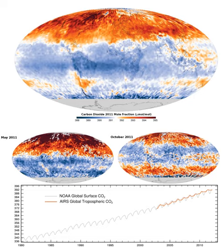Early in the Earth's life, scientists have found evidence of liquid water indicating a warm world, even though the Sun's output is believed to have only been 70 percent of what it is today. It has been suggested that higher carbon dioxide concentrations in the early Earth's atmosphere might help explain this faint young Sun paradox.